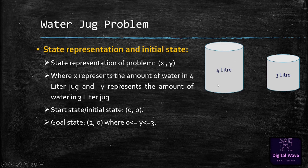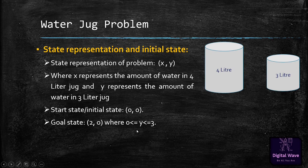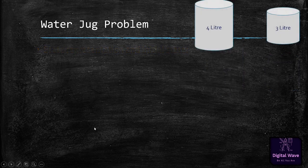Our goal state will be (2, 0), meaning we should have 2 liters of water inside the 4-liter jug and the 3-liter jug will be empty. This can also satisfy the condition 0 ≤ y ≤ 3, which will be automatically satisfied when we achieve this goal state.